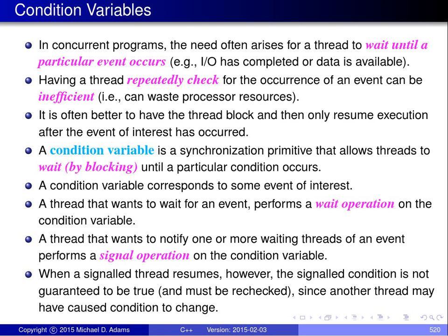This use of a condition variable will allow threads reading from the queue to block until the queue is not empty. When a thread that was waiting on a condition variable awakens, the thread must still recheck the condition associated with the condition variable because it might not be true anymore. For example, when the thread awakens, it would need to recheck if the queue is still not empty. The reason is that between the time the thread was signaled and the time when it was awoken, another thread could have come along and consumed the data in the queue, in which case the queue would be empty again. If upon awakening the condition is no longer true, the awakened thread can simply perform another wait operation.